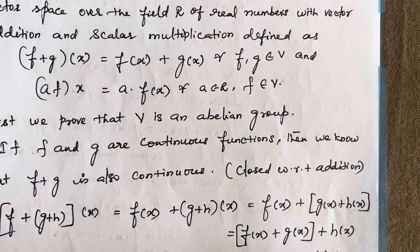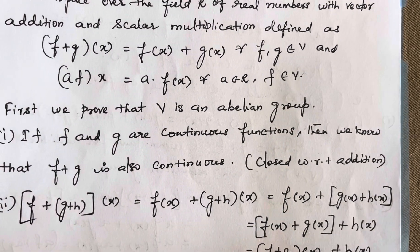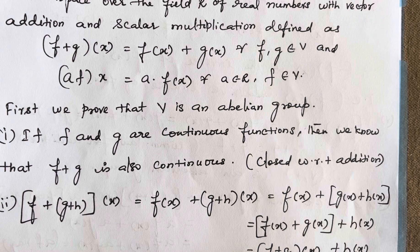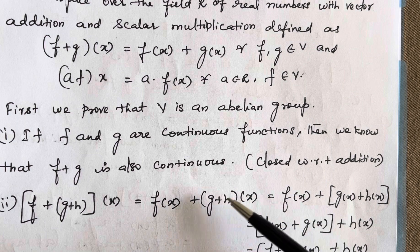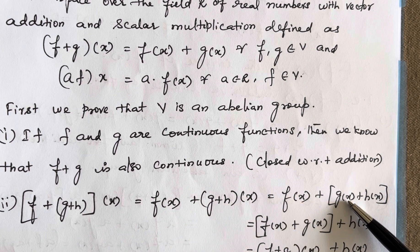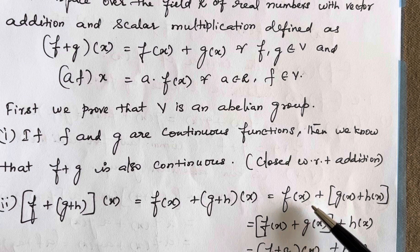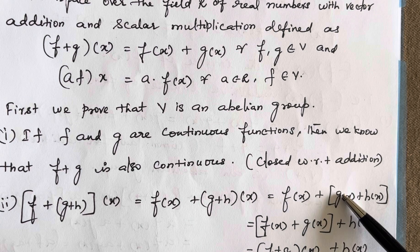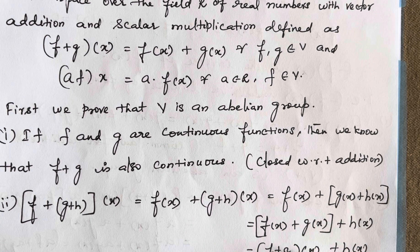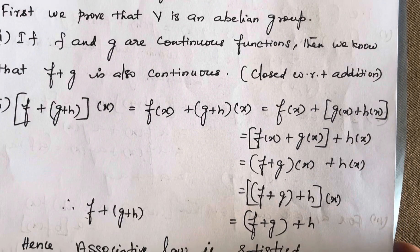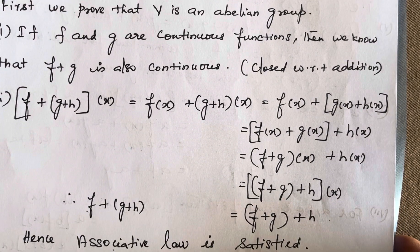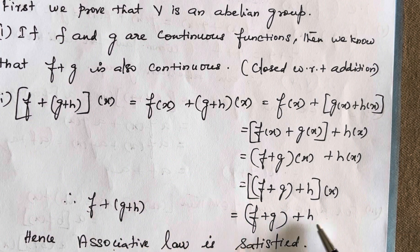Next is associativity. (f+g+h)(x) = f(x) + (g+h)(x). Since (g+h)(x) = g(x)+h(x), we can combine f(x) and g(x) to get (f+g)(x)+h(x), which equals (f+g+h)(x). Therefore f+(g+h) = (f+g)+h.